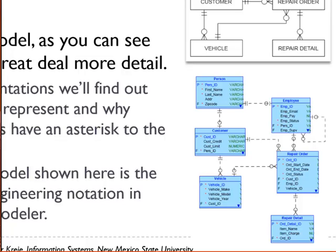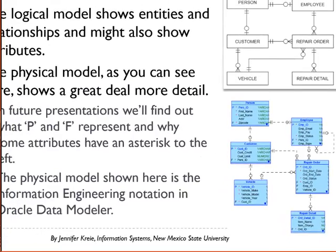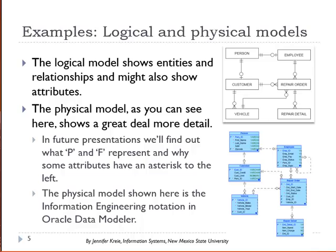We see the attributes and we start to see definition of the data type for those attributes. We see P by some attributes, we see F by some attributes.